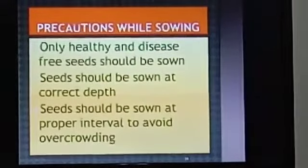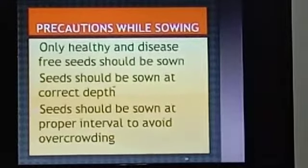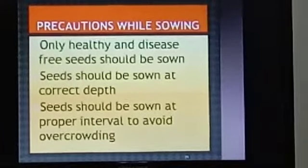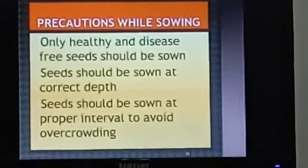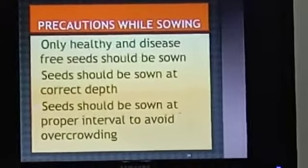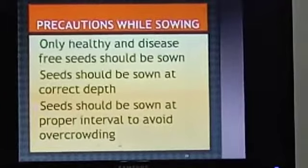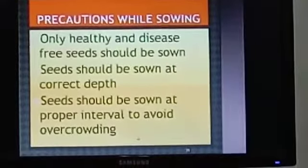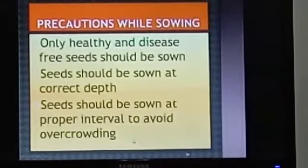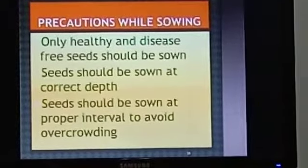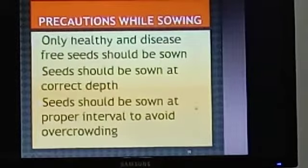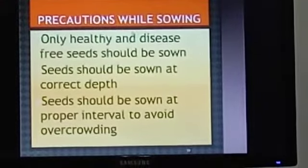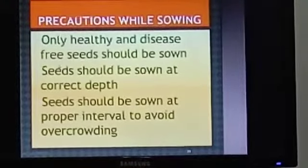If the seeds are not deep enough and are near the surface, they will be eaten away by birds. Seeds should also be sown at proper intervals to avoid overcrowding. If overcrowding occurs, there will be competition for nutrients and sunlight, and plants will grow in a cluster and not have a healthy growth. By following these precautions, we can get a very good yield.